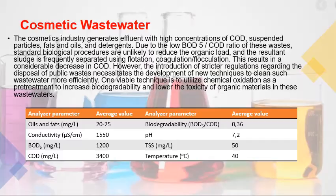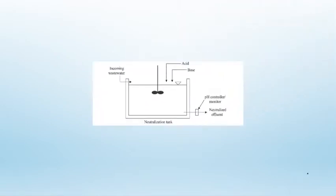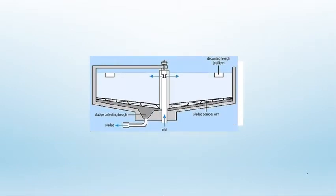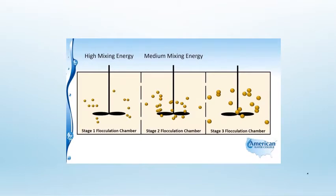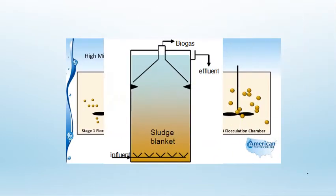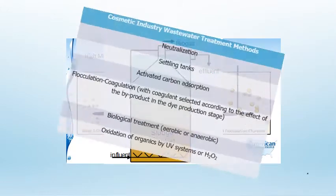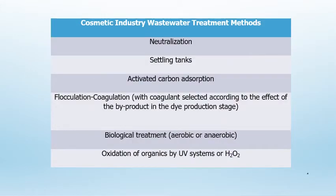The treatment system for this wastewater generally consists of neutralization, settling tanks, activated carbon adsorption, flocculation, coagulation generally with iron chloride, biological treatment (aerobic or anaerobic), and oxidation of organics with a UV system or hydrogen peroxide.